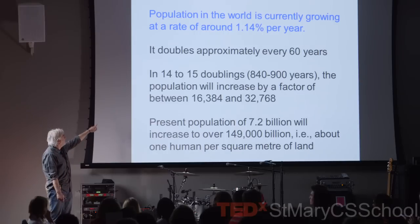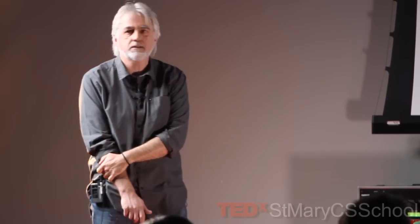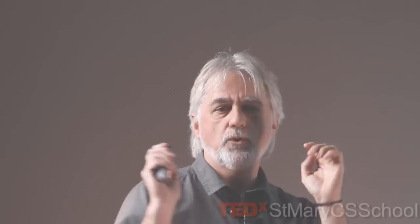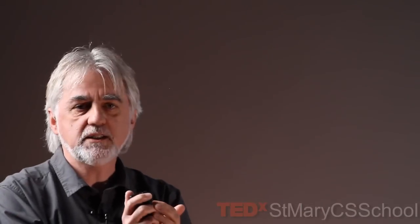If you look at only two doublings — that's 4 times — 4 times 7 means 28 billion. That's more than anybody believes our Earth can sustain. Here's another example. This is a mathematical diagram of a black hole, which is formed when you have a huge mass compressed to an extremely small volume. Think of our sun compressed to the size of an orange. The gravity increases and changes the fabric of space and time.